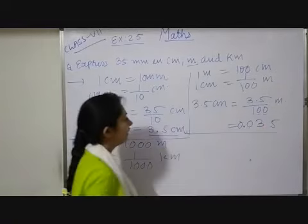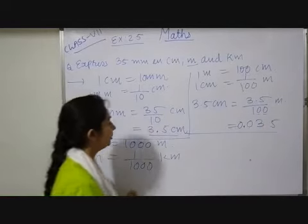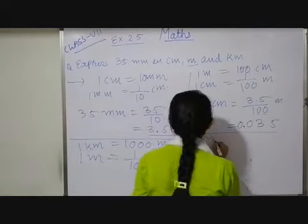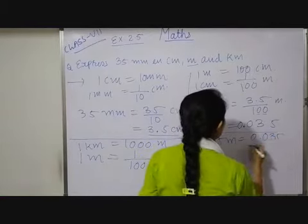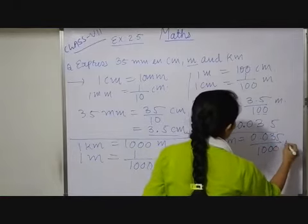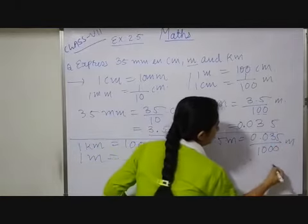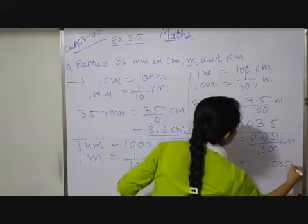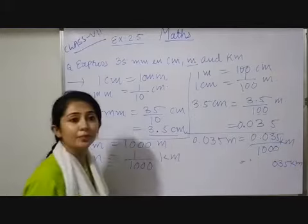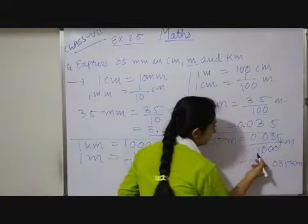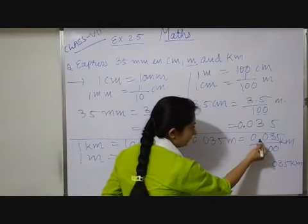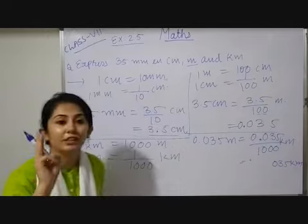So, here 0.035 I want to convert. Both sides I will multiply by 0.035 meter equals 0.035 upon 1000 kilometer. Now, 035 I will write as it is. Here, how many zeros are there after 1? 1, 2, and 3. So, before decimal I have to shift three more places.